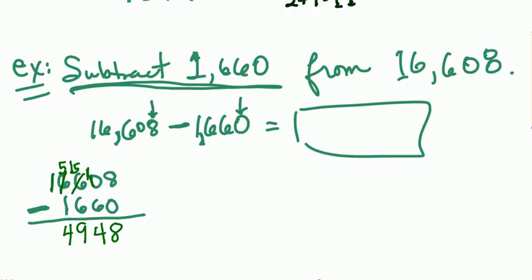And then 1 minus 0, right? If there's nothing there, it's understood that there is a 0 there. So we have that 1 that just gets brought down into the place. So the answer here, 16,608 minus 1,660 is equal to 14,948.